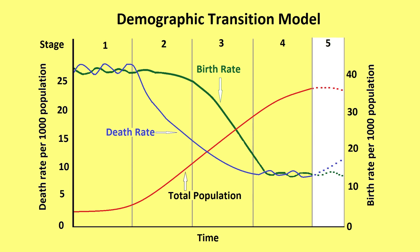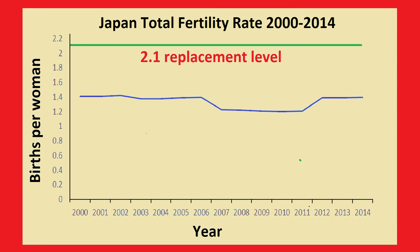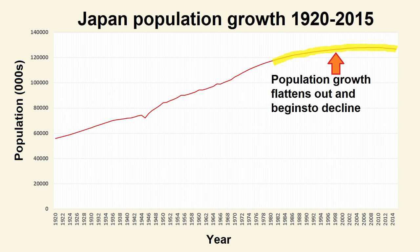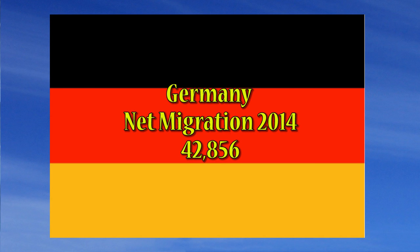In recent years, some demographers have added a fifth stage to the model. This is because some more economically developed countries, such as Japan, have total fertility rates below the 2.1 replacement level, resulting in a declining population. Some European countries, such as Germany, also have total fertility rates below the replacement level, but have managed to maintain their population through immigration.